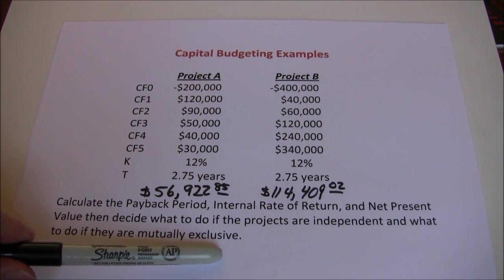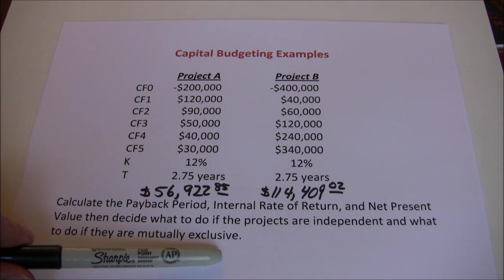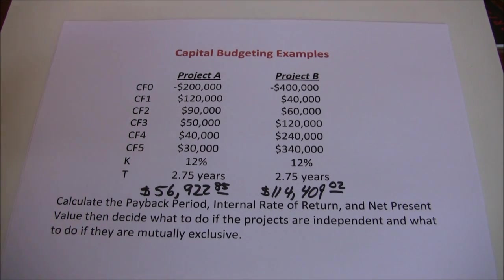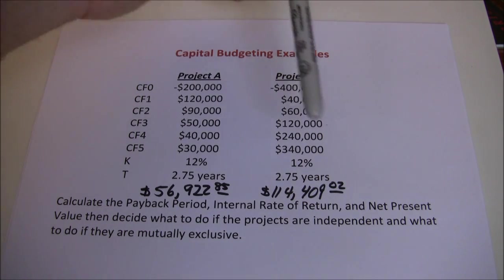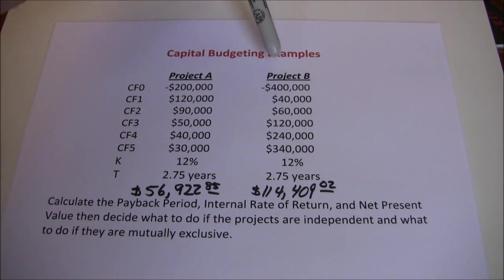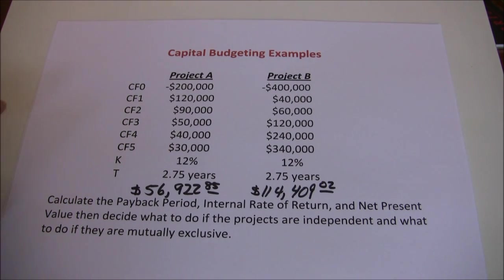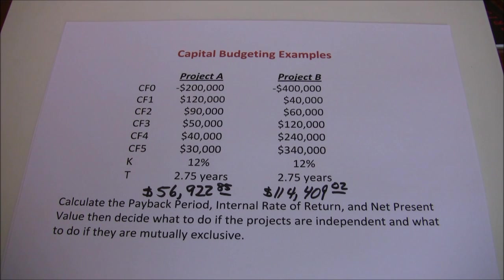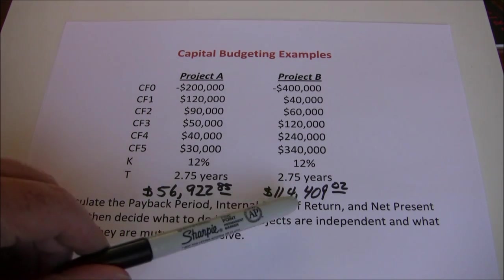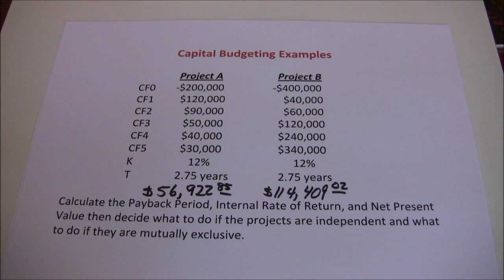How about if they're mutually exclusive? With mutually exclusive projects, we need to choose the best one. If we take A, then B is off limits. If we take B, then A is off limits — we can't do both. If they're mutually exclusive, we have to choose the best project, which is the one that adds the most to shareholder wealth. So if they're mutually exclusive, we want to take project B. This should give you a good overview of how to use your HP 10B2 financial calculator to calculate net present value.